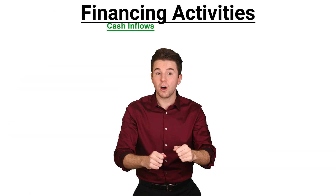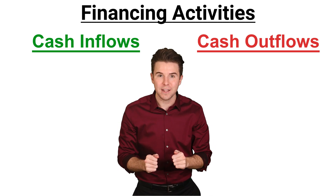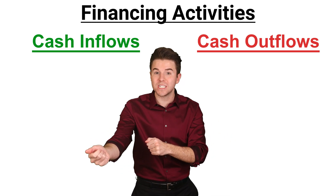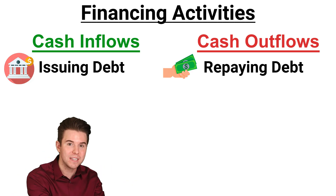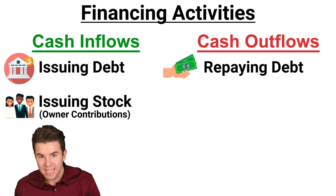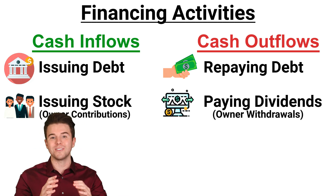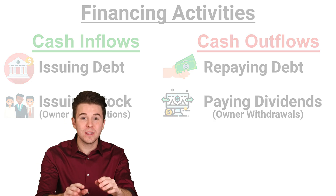Financing activities involve long-term liability and equity items, which includes cash received from issuing debt and cash repayment of those amounts borrowed. It also includes cash received or distributed to owners. However, it does not include cash lent or collected for notes receivable — these are investing activities, which is covered in another video.